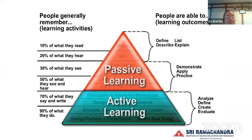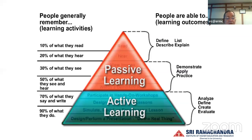When you allow passive learning, as it used to happen during traditional curricular practice, students generally — and this is proven by literature — remember only 10% of what they read and 20% of what they hear, 30% of what they see. But when they do, they actually remember almost 90%. So we should enable more and more active learning principles for students to learn.